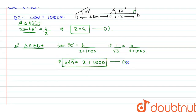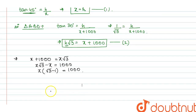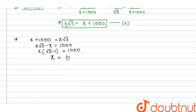From the first equation, I take the value of h which equals x. Substituting x in place of h in the second equation, it can be written as x plus 1000 equals x times root 3. This means x root 3 minus x equals 1000. Taking x common: x times (root 3 minus 1) equals 1000. So x equals 1000 divided by (root 3 minus 1).